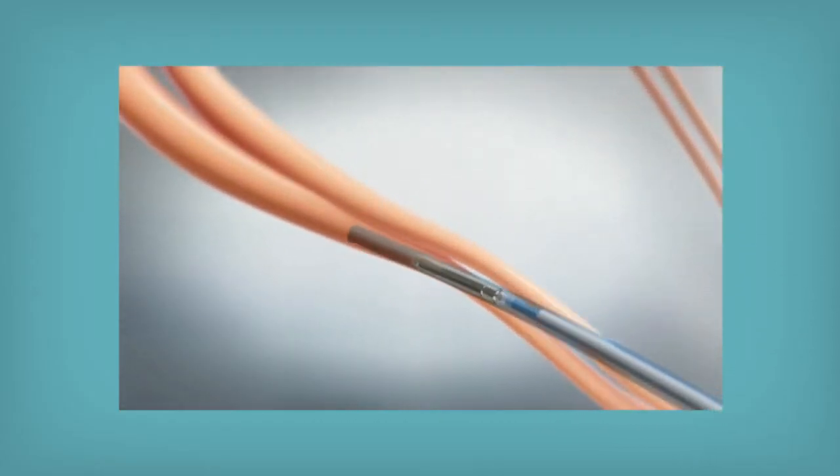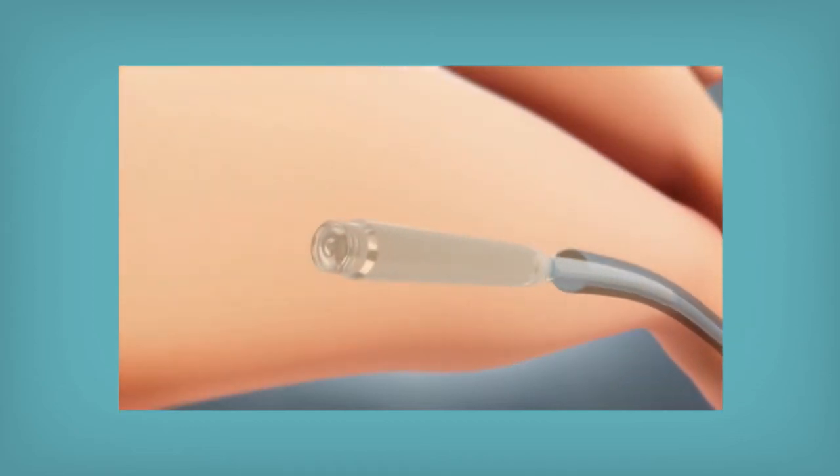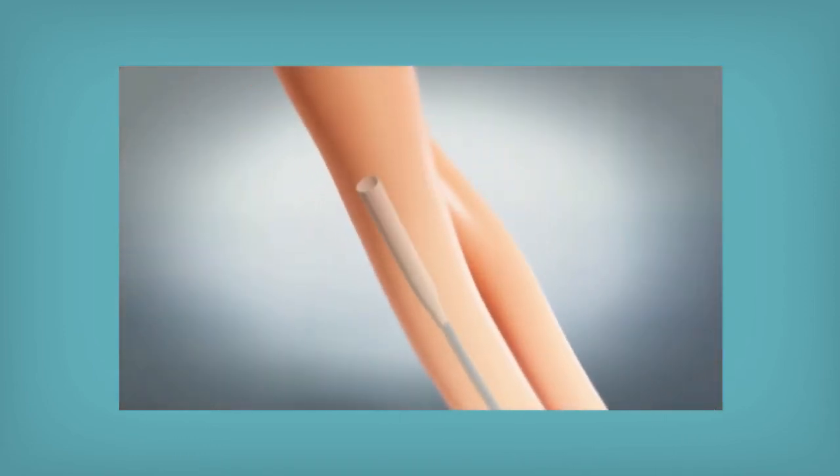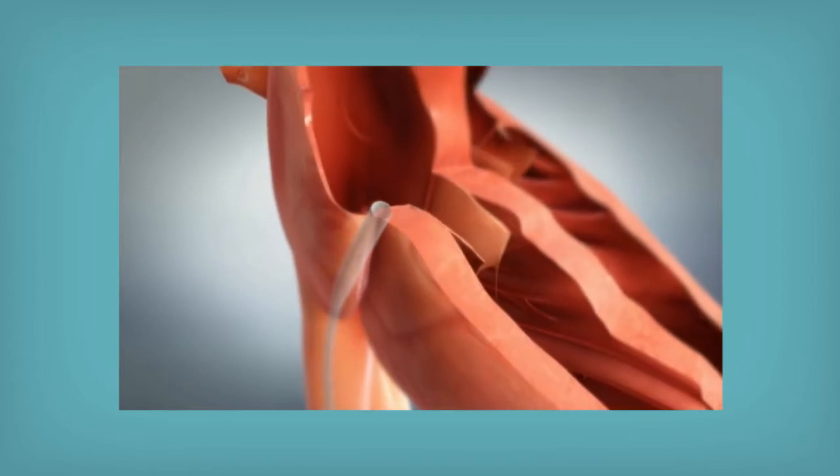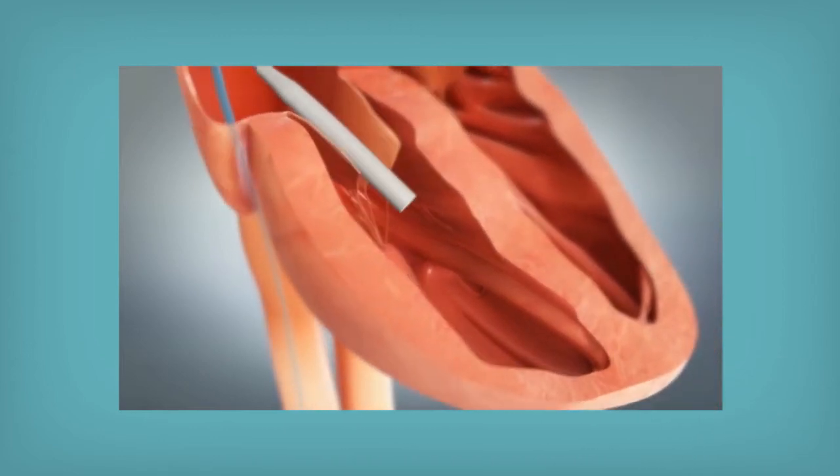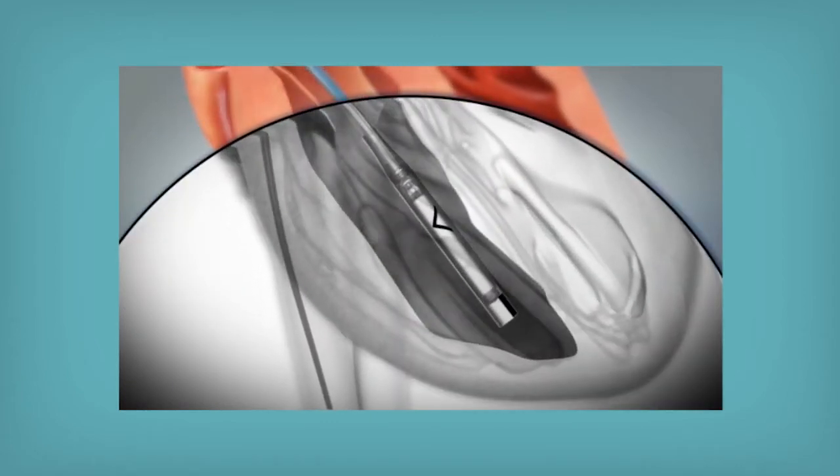The leadless pacemaker is implanted without surgery. There's no cutting involved. We put a catheter or sheath in from the patient's femoral vein. Through that sheath, the catheter on which the pacemaker is loaded is advanced up to the heart and then across the tricuspid valve until you situate it in the proper position in the right ventricle.